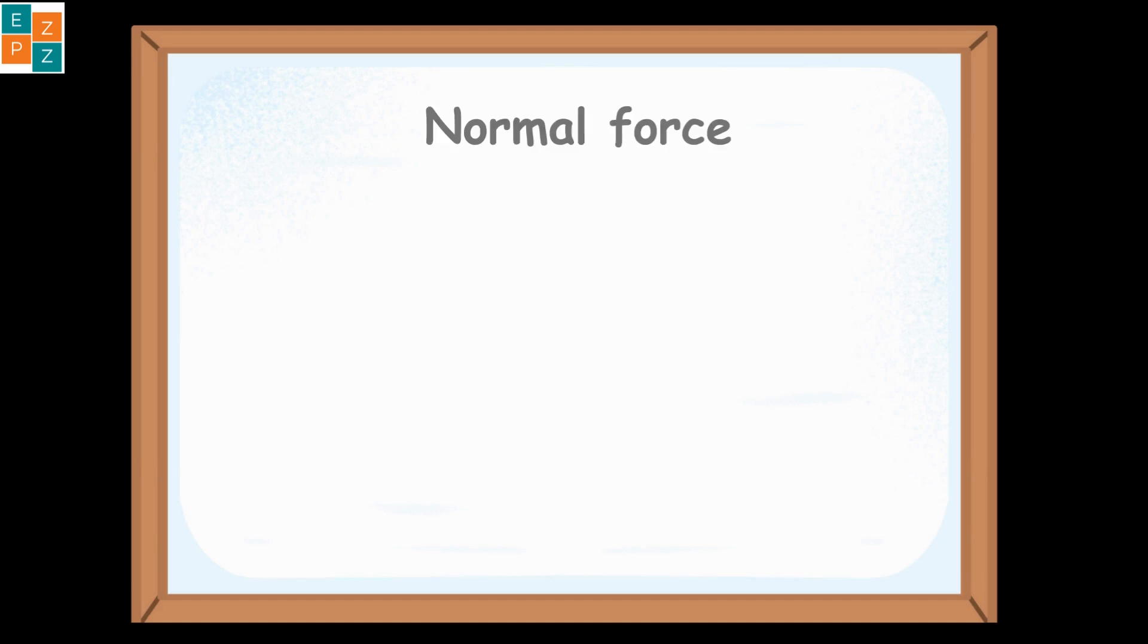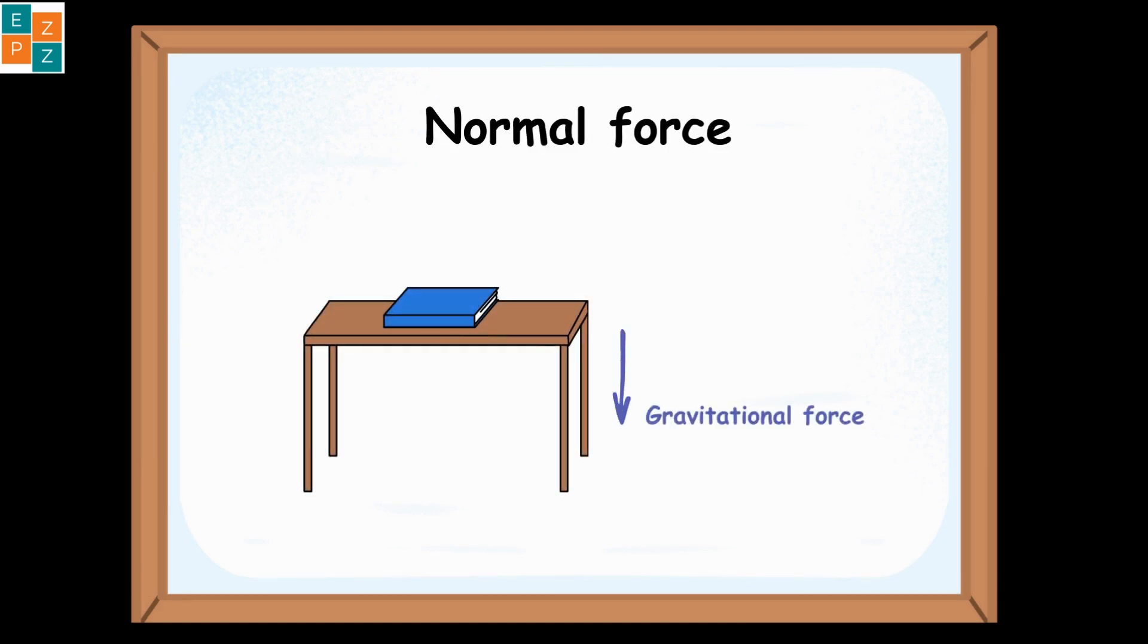Another example of a contact force is the normal force. Imagine a book placed on a table. Gravity pulls the book downward, but the table doesn't let it fall. Instead, the table exerts an upward normal force that balances the downward force of gravity, keeping the book at rest. If the table weren't there, the book would fall due to gravity, proving that the normal force is what prevents objects from sinking through solid surfaces.